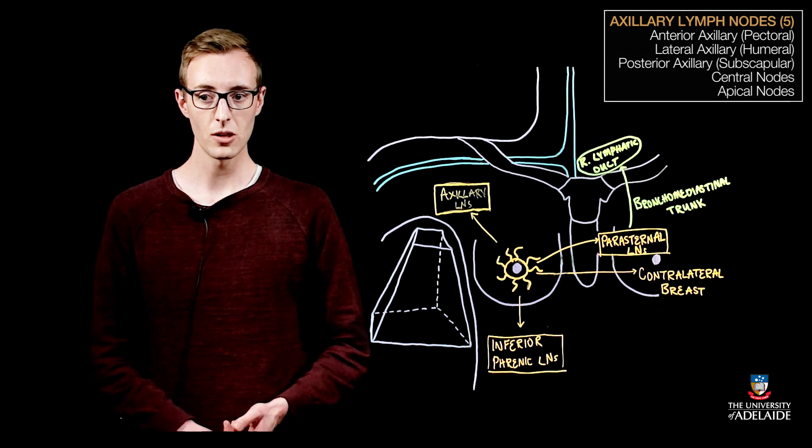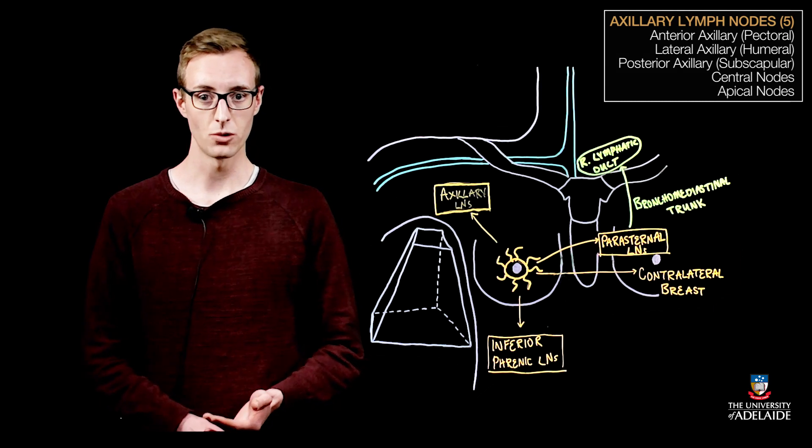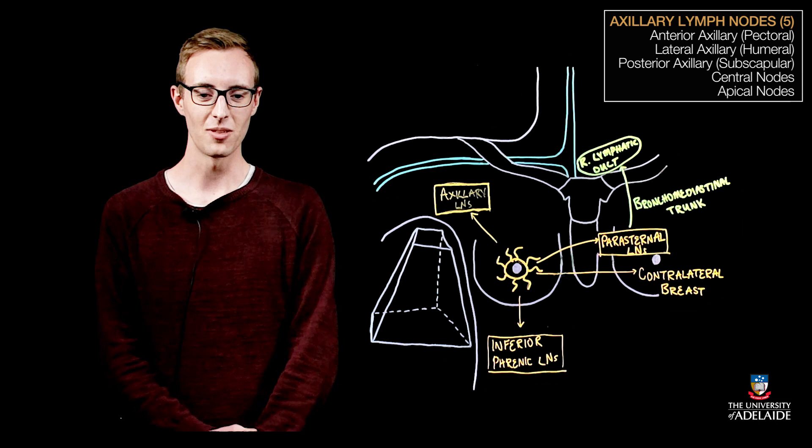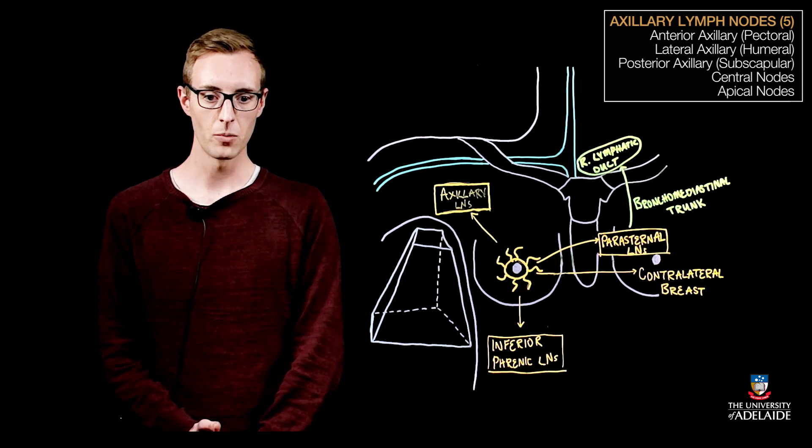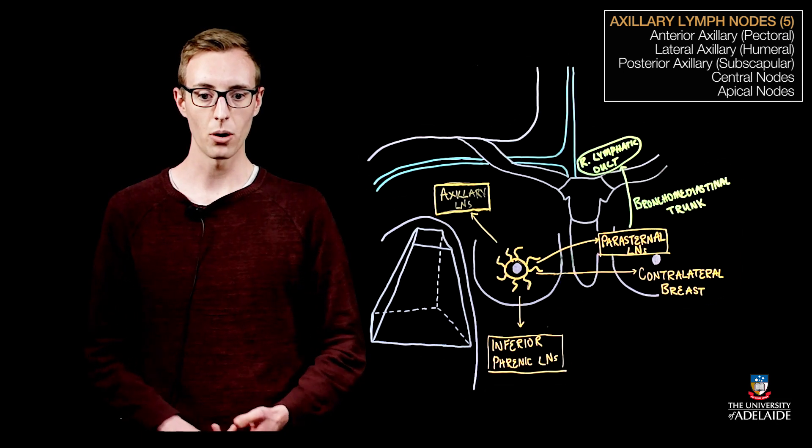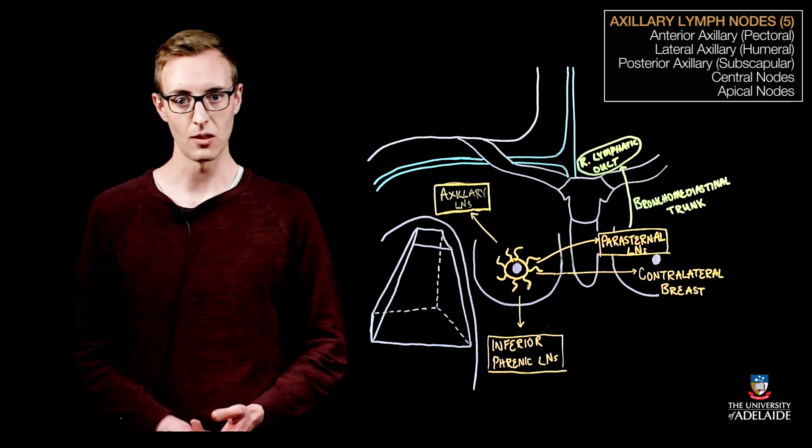The anterior, lateral, posterior, central and apical nodal groups. The arrangement of these nodes is similar to a pyramid. At the base of the pyramid there are three points and the anterior, lateral and posterior nodal groups sit at each of these points.